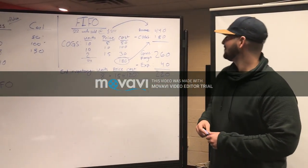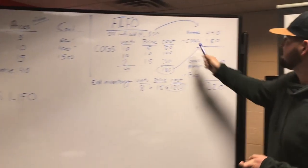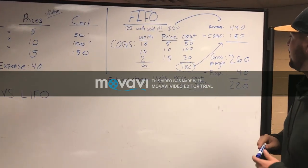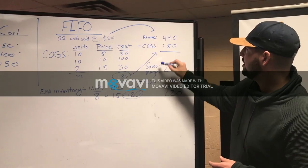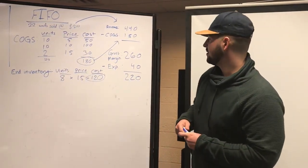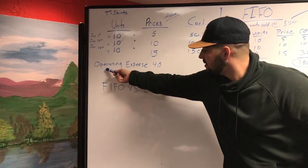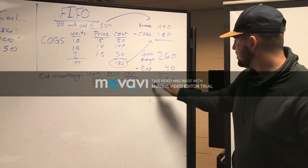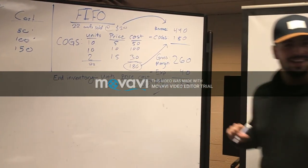Great explanation, Tom. In this problem, we sold 22 units at twenty dollars, which gave us a revenue of four hundred and forty dollars. As Tom said, our cost of goods sold was one hundred and eighty dollars. To calculate our gross margin, which is revenue minus cost of goods sold, we get two hundred and sixty dollars. We also have to factor in an operating expense of forty dollars, which we subtract from our gross margin to get a net income of two hundred and twenty dollars.